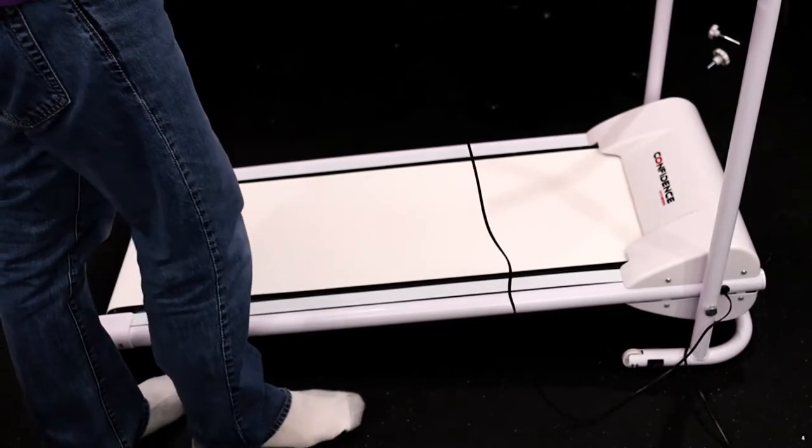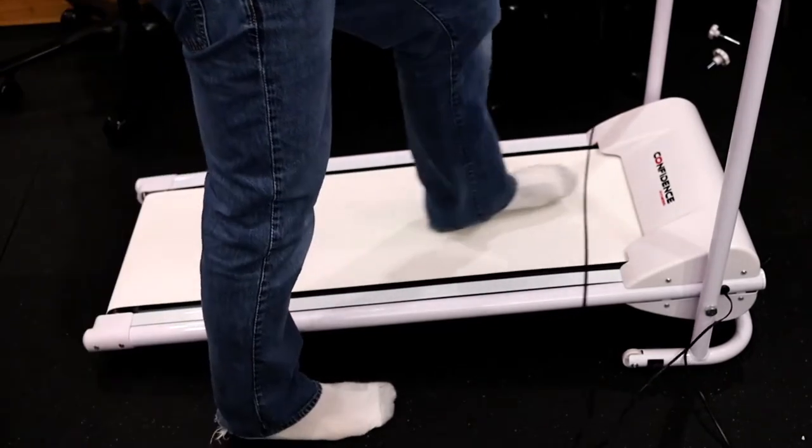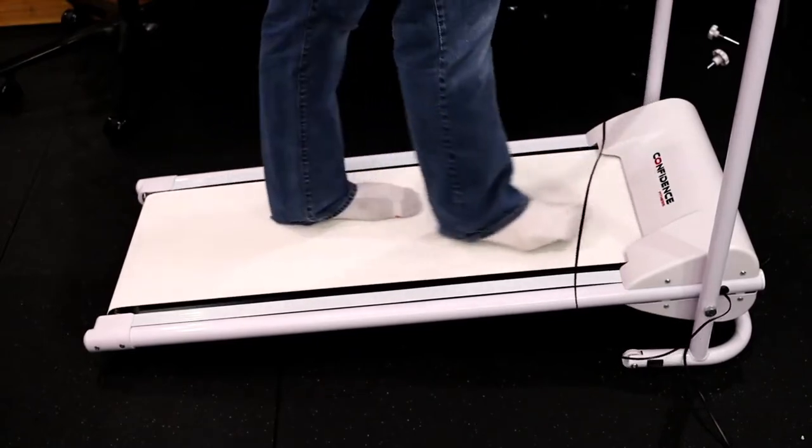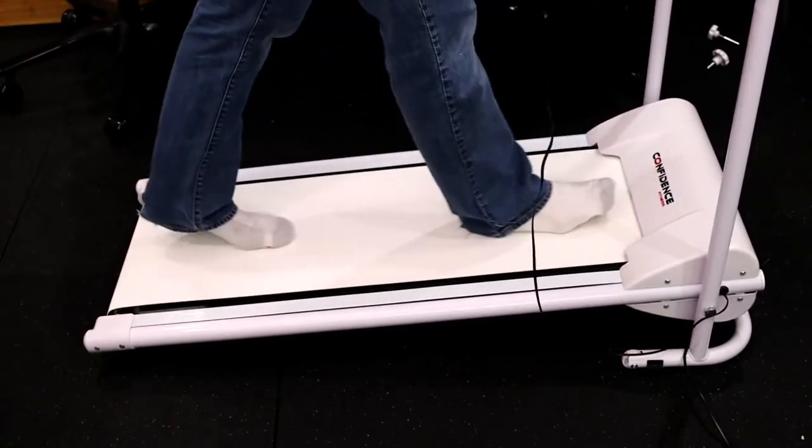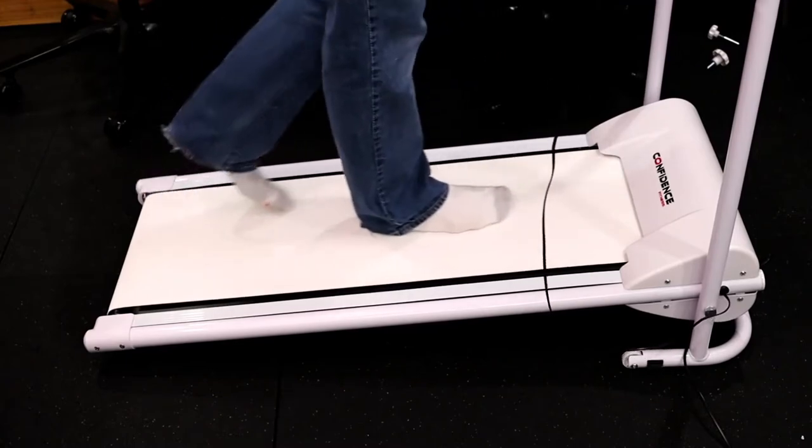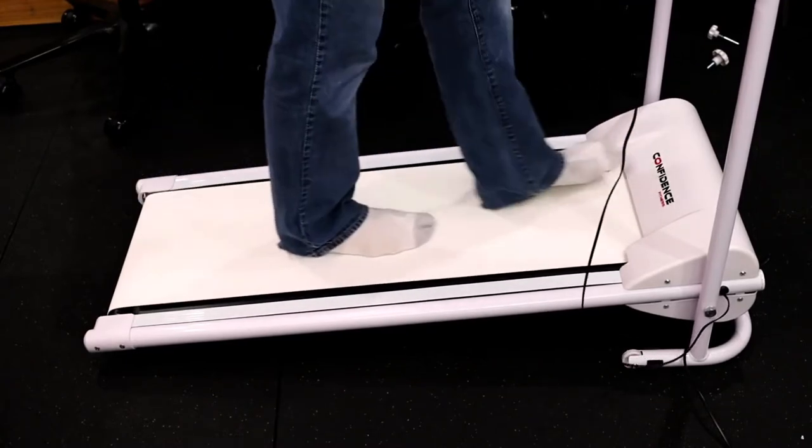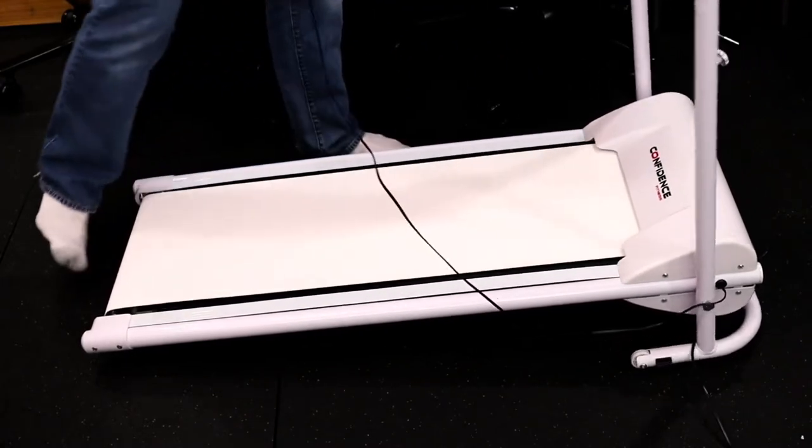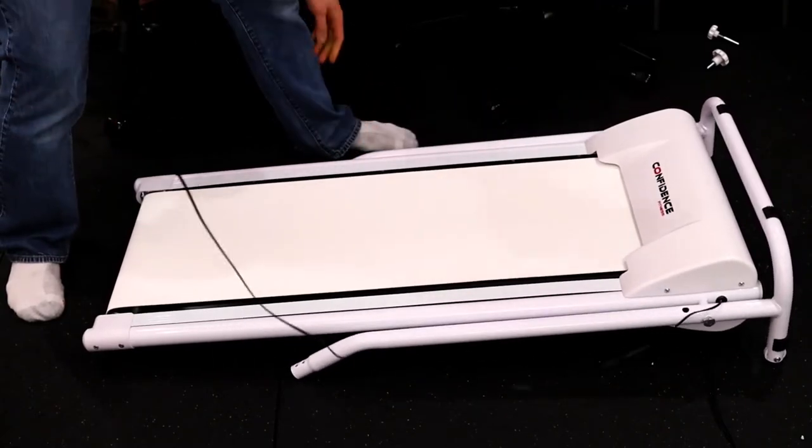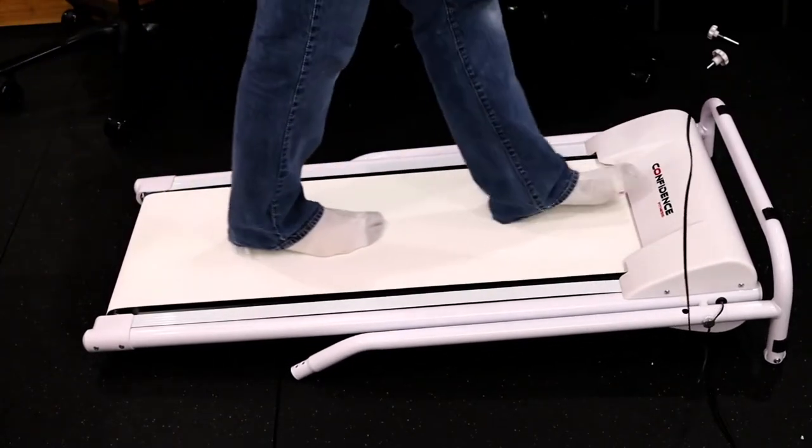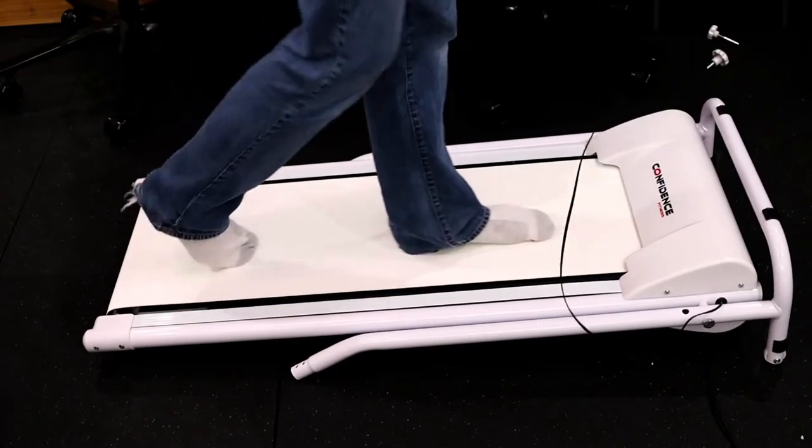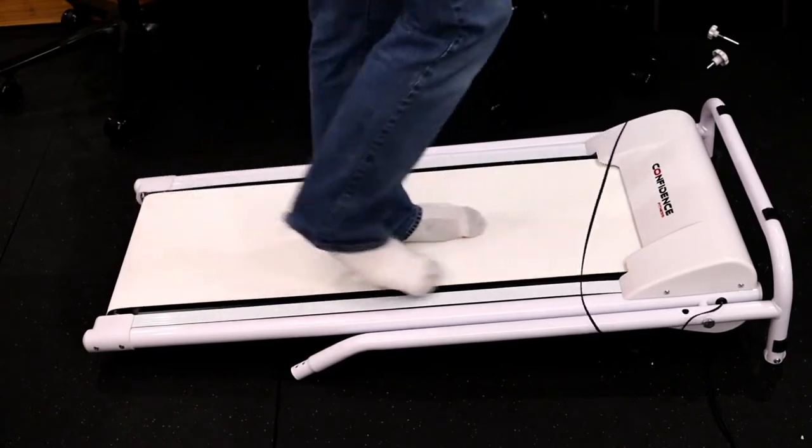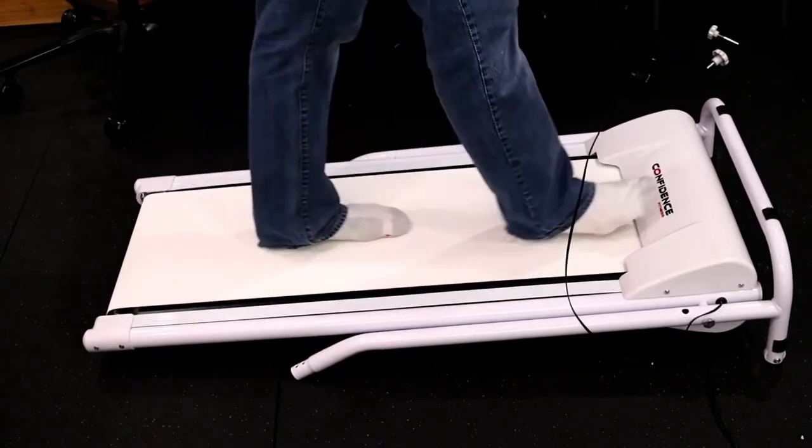So I'm going to increase the speed just to a brisk 1.4. And I can just walk like this and use my computer. Or if this is proving to be too much of an incline, I can just lower it. Now this is a little bit flatter. This is closer to like a two degree incline or so. And that's pretty much it.